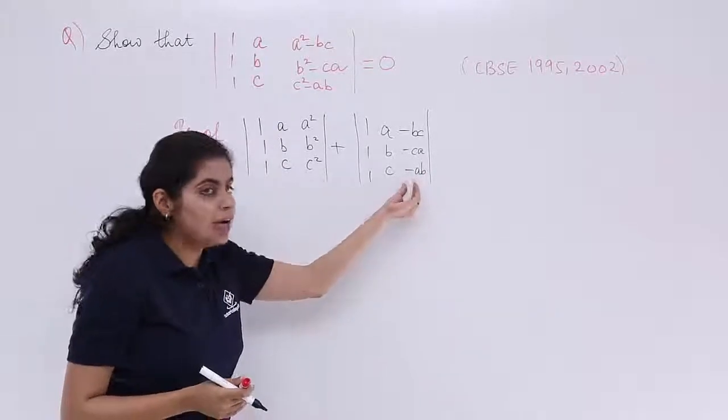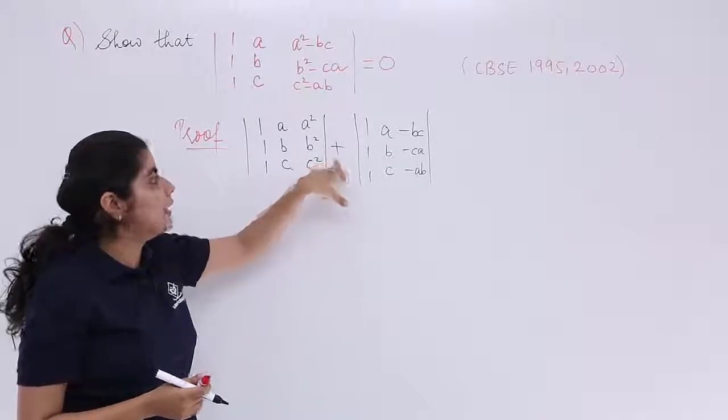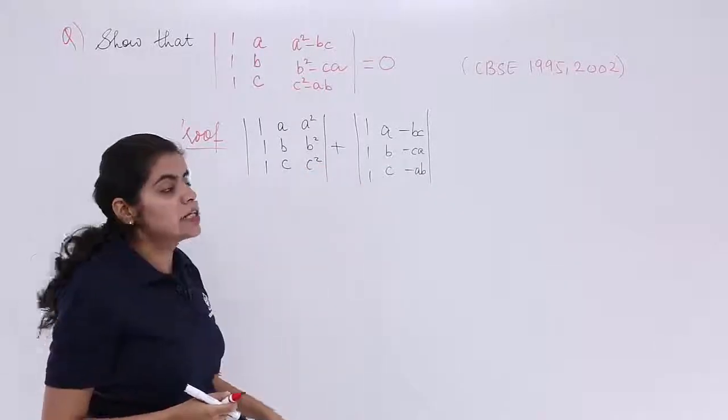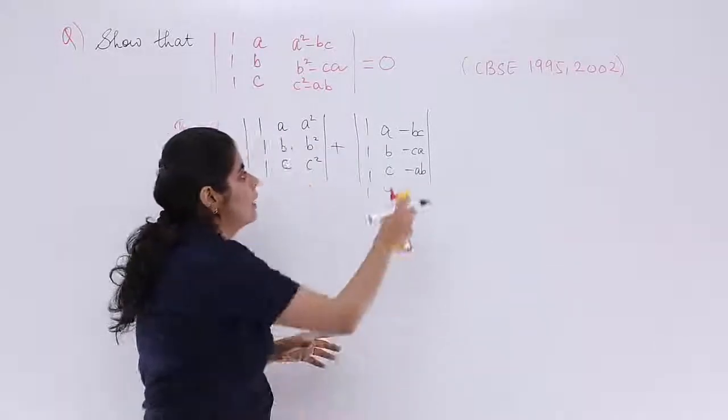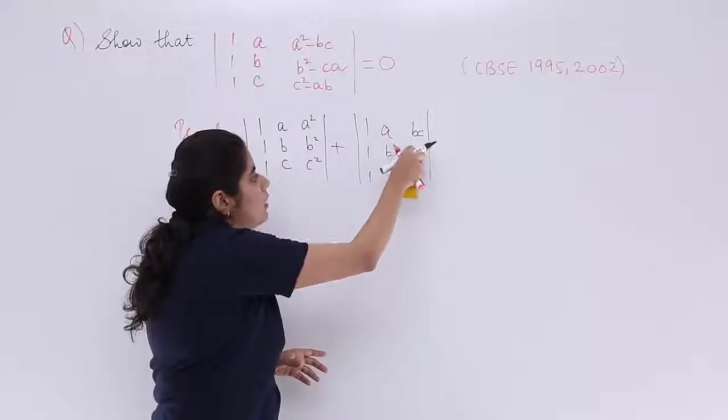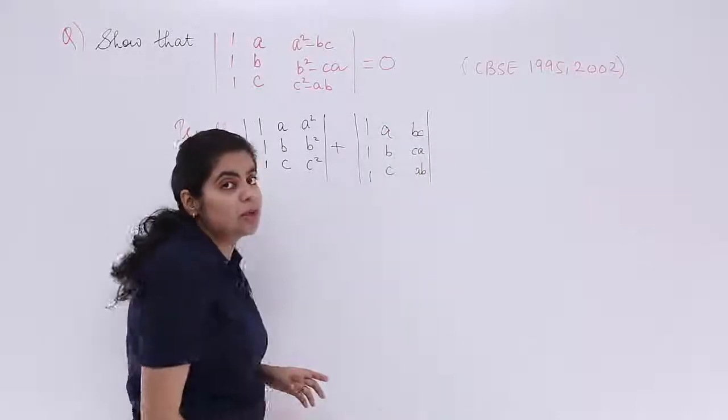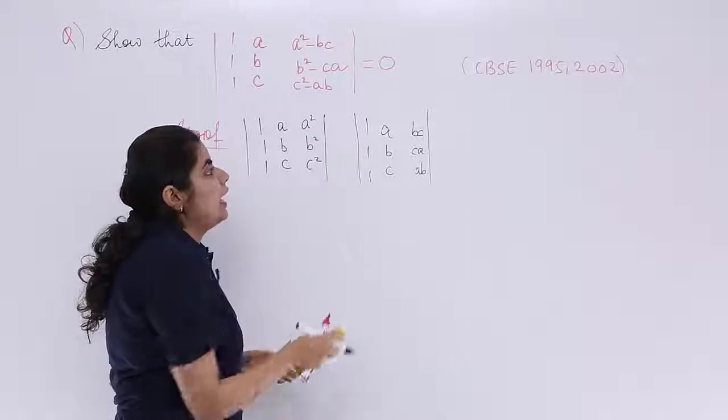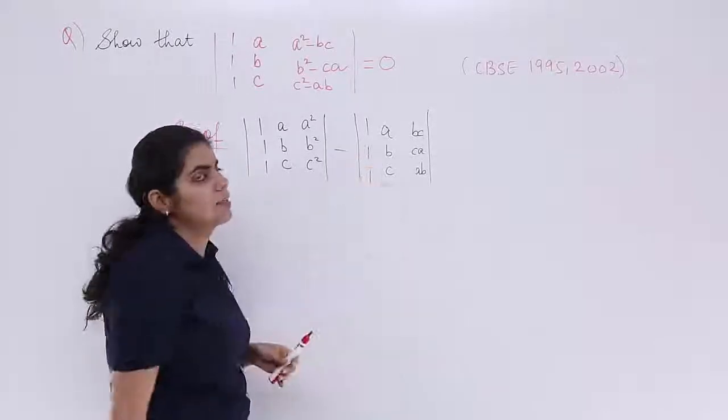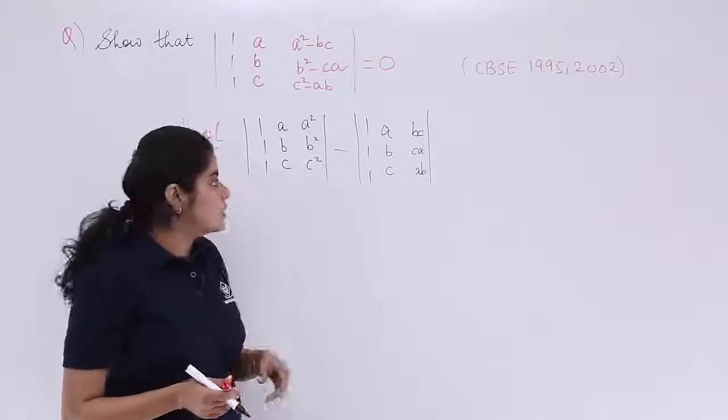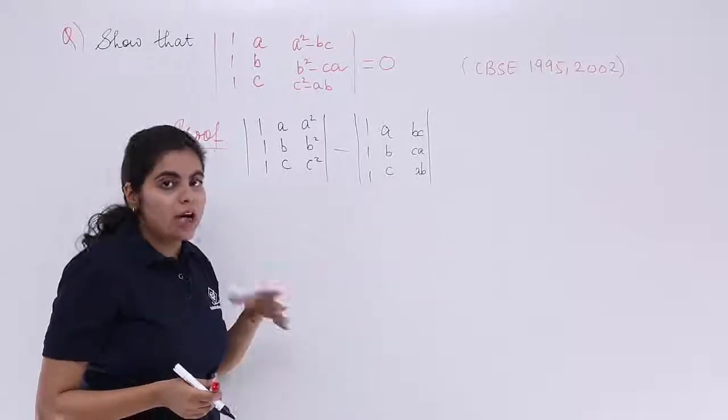Now, if you want, you can take out this minus sign as common and take it outside. So, that is what I am going to do. I am taking this minus sign from everywhere common. That is taking the minus sign common from column number three, and that minus sign will come out. So, it will be minus here. When this happens, my two determinants are obtained.